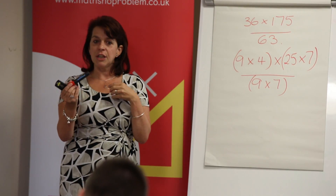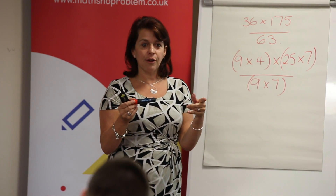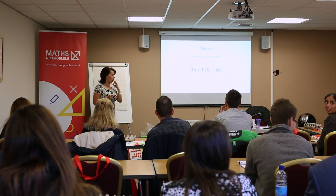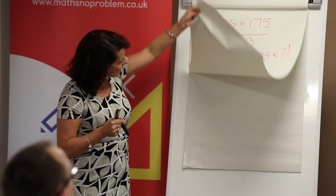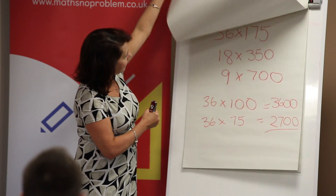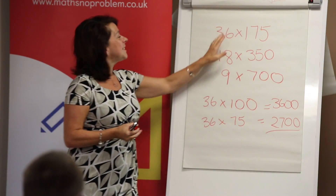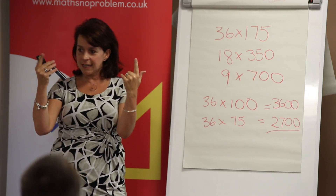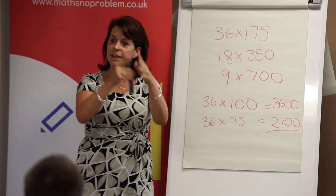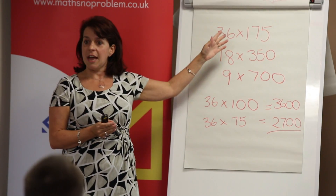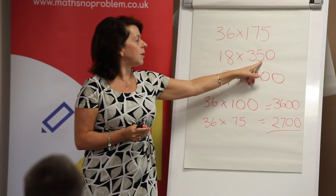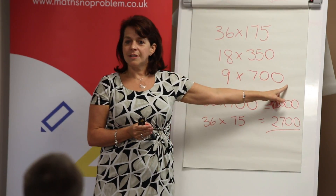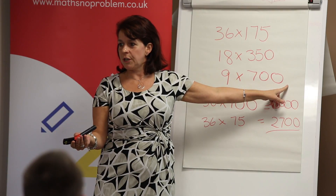Playing around with the numbers, using them intelligently to make them work for us. Did anybody come up with a different way of doing it? A student suggested halving 36 to 18 and doubling 175. If you think of 36 times 175 as an array — a rectangle — if you halve one number and double the other, it's going to be exactly the same area. So we do that again: half that one, double that one, and then we've got 6300 divided by 63 — job done.